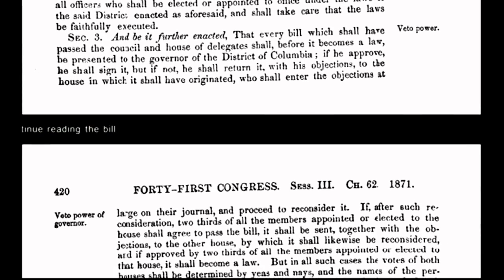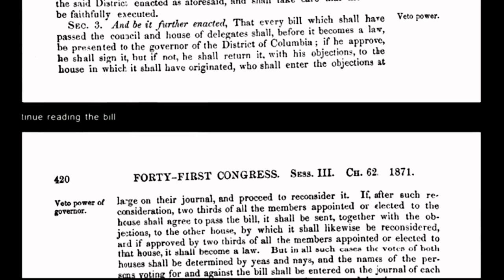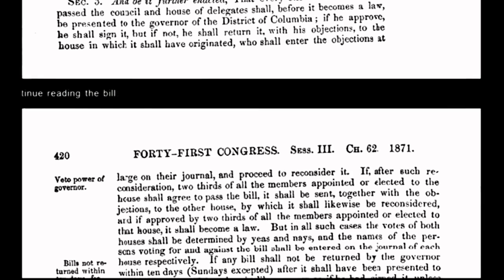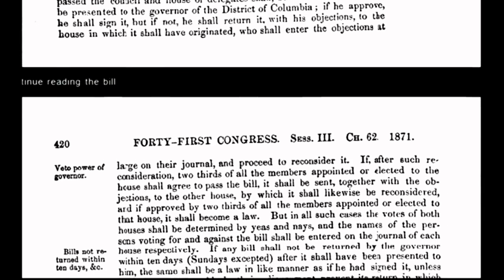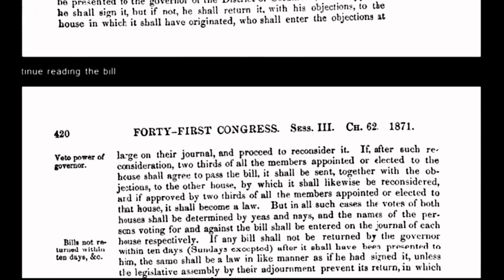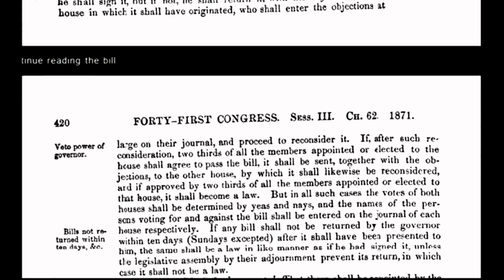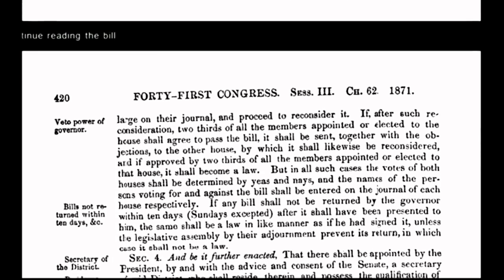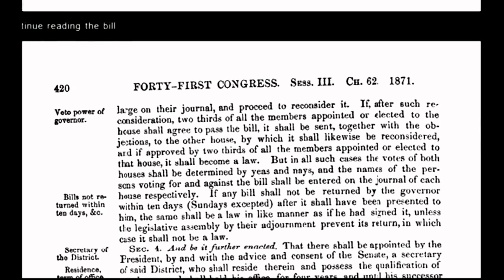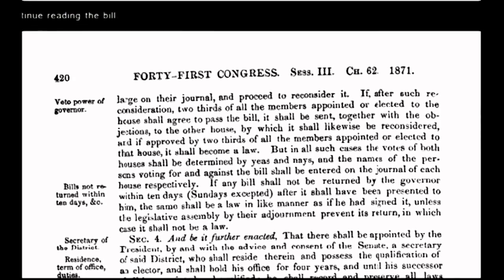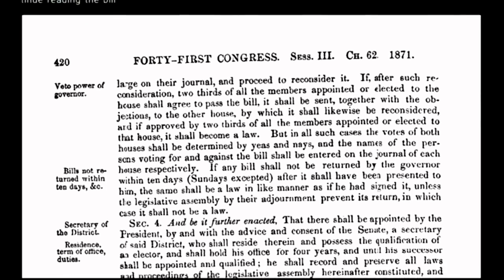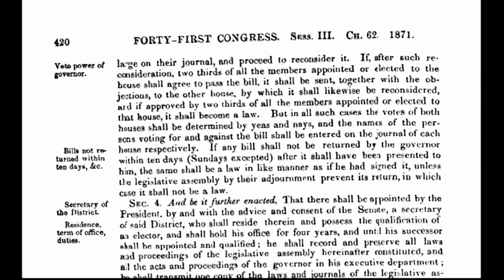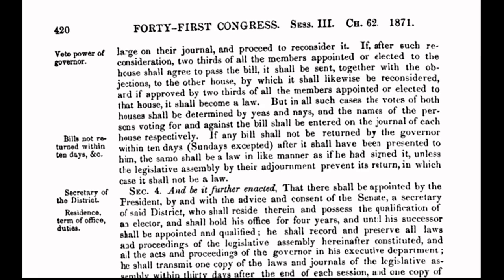Instead of having absolute and unalienable rights guaranteed under the organic constitution, we the people now have relative rights or privileges. One example is the sovereign's right to travel, which has now been transformed under corporate government policy into a privilege that requires citizens to be licensed — an example would be passports. By passing the Act of 1871, Congress committed treason against the people who were sovereign under the grants and decrees of the Declaration of Independence and the organic constitution. The Act of 1871 became the foundation of all the treason since committed by government officials. The United States isn't a country — it's a corporation.